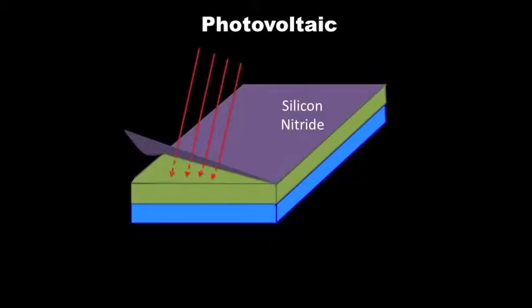A silicon nitride layer is also placed on top of these two layers because it is an anti-reflective optical coating. Silicon nitride allows light to pass through instead of being reflected away or absorbed.